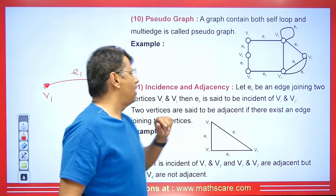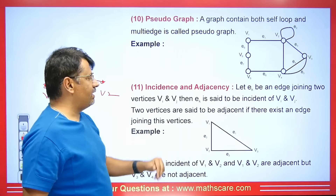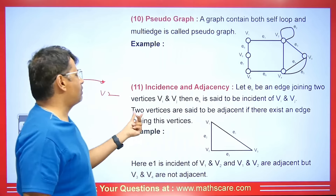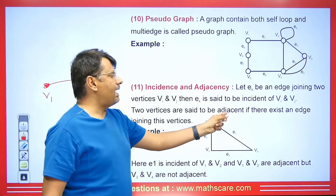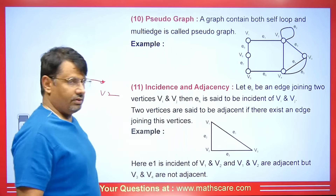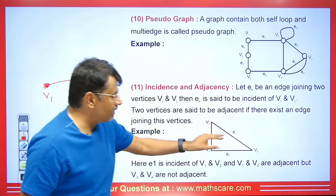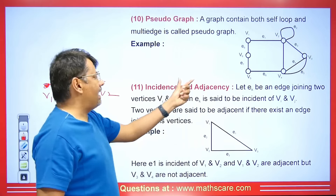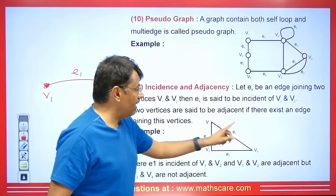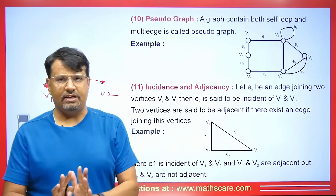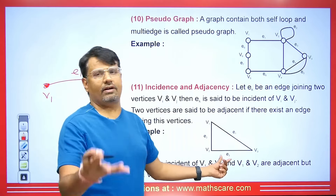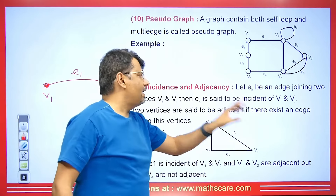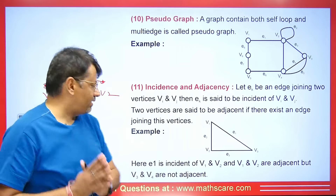Let EK be the edge joining vertices VI and VJ. Then EK is called incident on VI and VJ. VI and VJ are said to be adjacent if there exists an edge between them. For example, V1 and V2 are adjacent to E1, but V1 and V3 are not adjacent to E3 because they don't connect through E3. Adjacency applies to the edge with which the vertices are connecting.